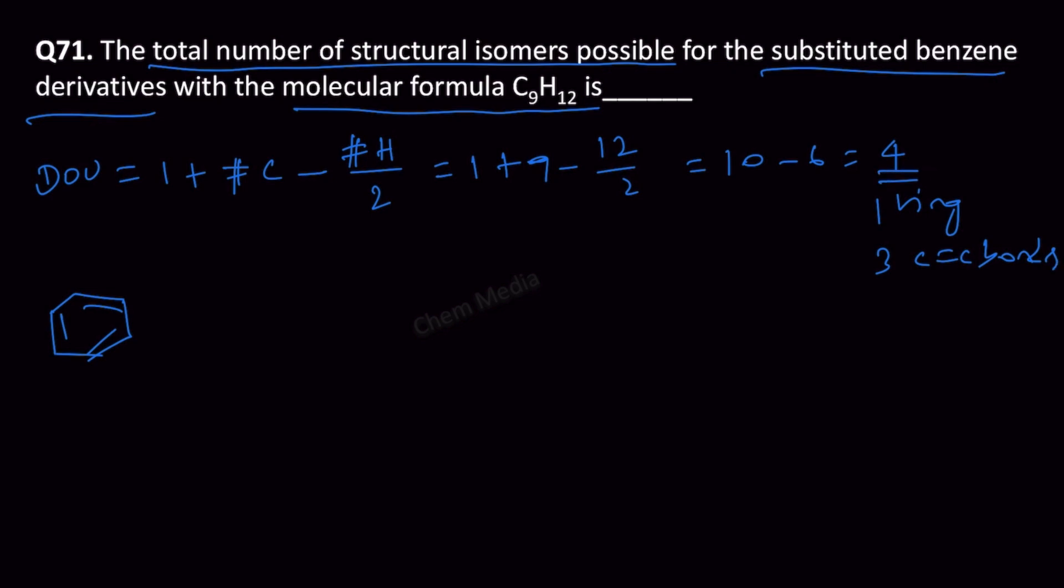Let us put a propyl group that would become 1 isomer because this is C6H5 plus C3H7, so together it becomes C9H12.